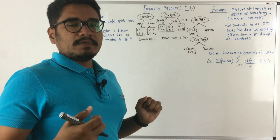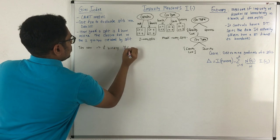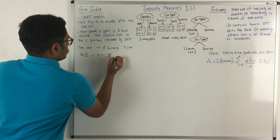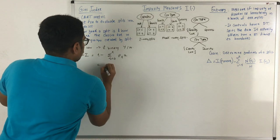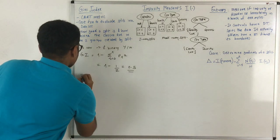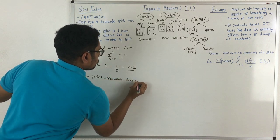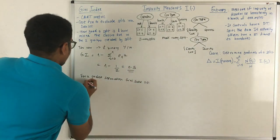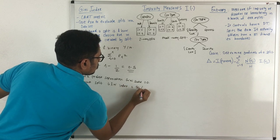In the Gini index, whenever the target variable is binary (yes or no), the Gini index is given by: 1 minus the summation from t equals 0 to 1 of p(t) squared, where t represents the target attribute value. This evaluates to 1 minus 1/2, which is 0.5. For a perfect separation, the Gini score equals 0, meaning all attributes are well separated. For the worst split, the Gini index comes out to be 50/50.